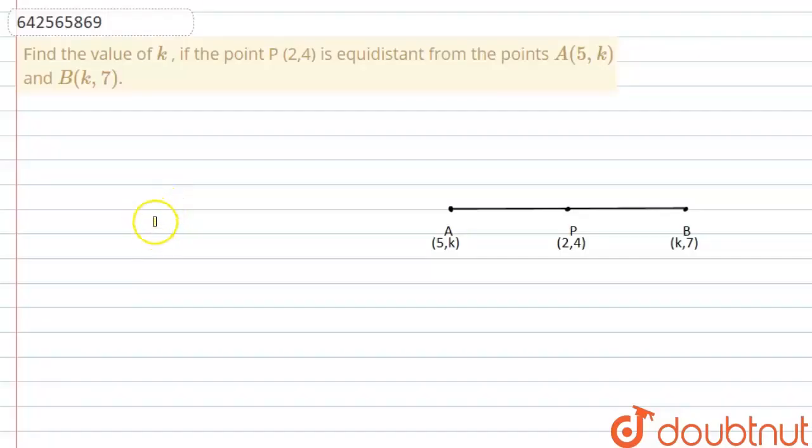Hello everyone, let's start the question. The question says find the value of k if the point P is equidistant from the points A and B.